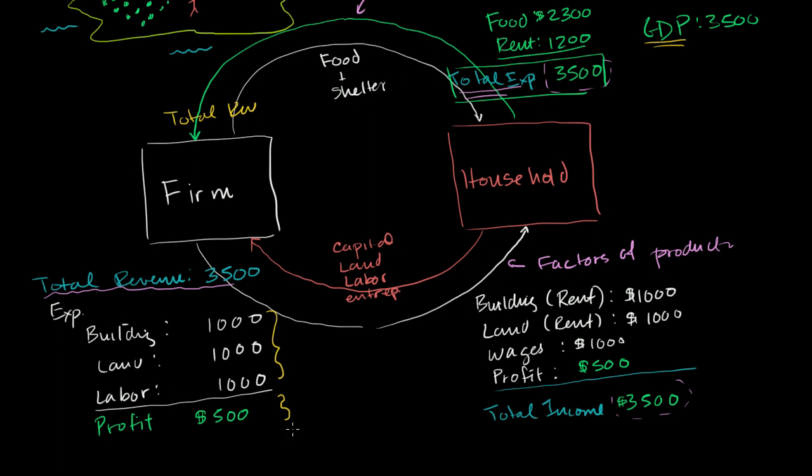And so let me write this down. The way we looked at it in the last video, GDP was equal to household expenditures, which was equal to firm revenues, which was equal to firm expenses plus profit, which is equal to household income. Household income, and of course household income is then, at least in this case, it ended up being equal to household expenses.